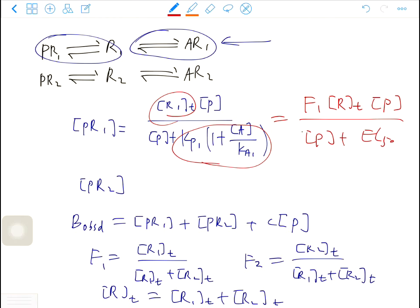EC50 is this part. It depends on both KP1 and KA1, and on the concentration of the competitor in the system.